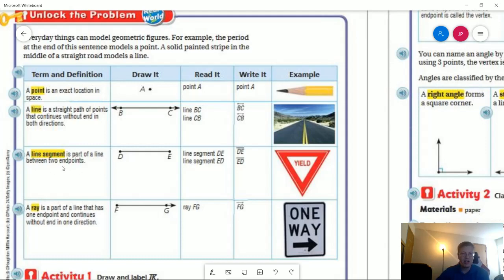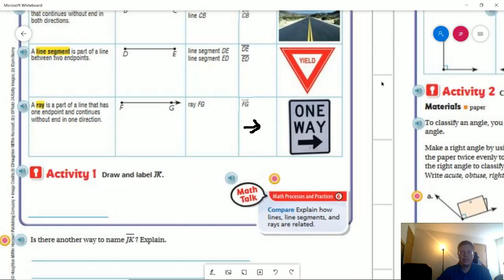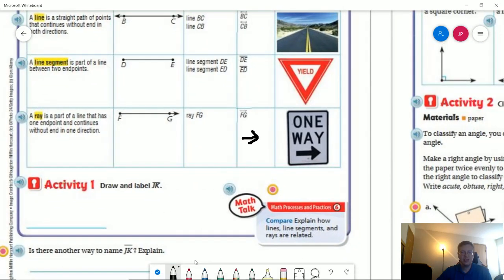To write that, we would have arrows going off each side. That means that we have these two points but we're going to keep going in each direction past those two points. A line segment is going to be part of a line between two endpoints. There is no continuation in this direction or in this direction and that's just represented by a straight line written over top of the two points. A ray is part of a line that has an end point. In this case F is our end point. Once we get to G we are going to keep going straight in that direction. That would be represented by something that looks like an arrow.